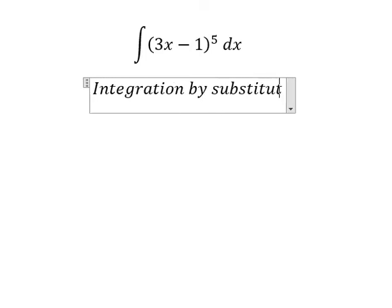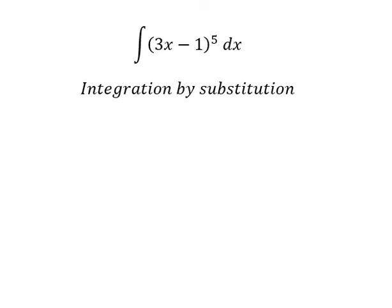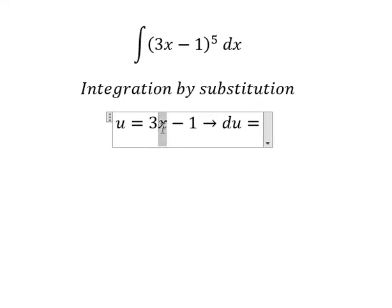By substitution, I will set u equal to 3x minus 1. Then we take the first derivative of both sides. The derivative of 3x gives us 3.